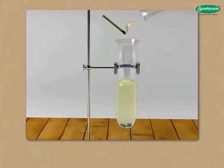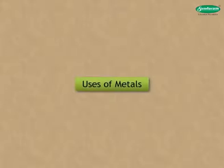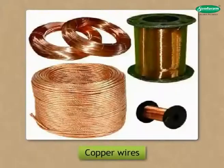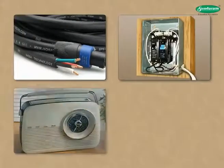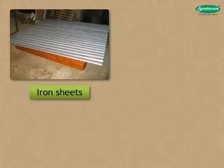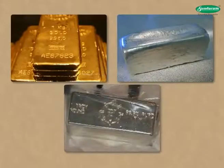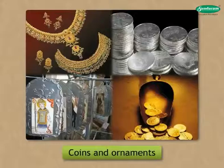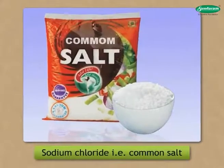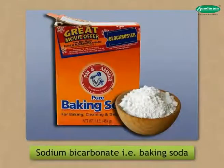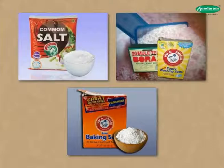Uses of metals: they are widely used for making cooking utensils. Copper wires are mainly used as conducting wires and in electrical gadgets like radios and refrigerators. Iron and aluminium sheets are used to make roofs of houses. Gold, silver, tin, etc. are used to make coins and ornaments. Mercury is used in thermometers. Compounds of sodium such as sodium chloride (common salt), sodium carbonate (washing soda), and sodium bicarbonate (baking soda) are used for various purposes in our day-to-day life.